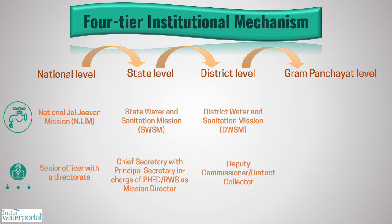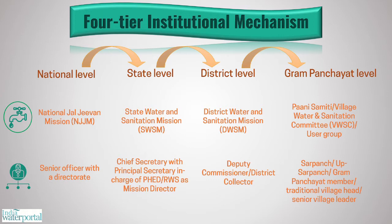The Gram Panchayat level is called the Pani Samiti or Village Water and Sanitation Committee or the User Group. The committee will be headed by the Sarpanch, Upt Sarpanch, Gram Panchayat member, Traditional Village Head, or Senior Village Leader as the Gram Sabha may decide, and may consist of 10–15 members — up to 25% elected members of Gram Panchayat, 50% women members, and remaining 25% representatives of weaker sections of the village.